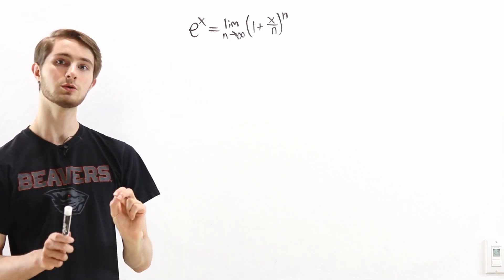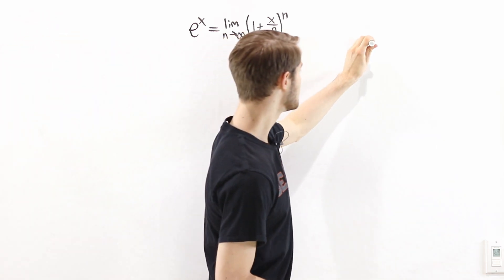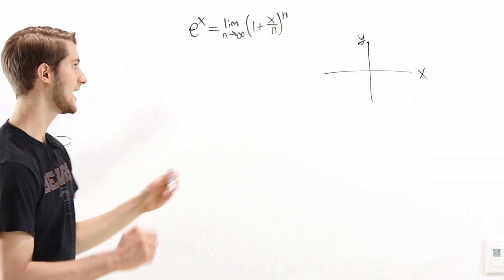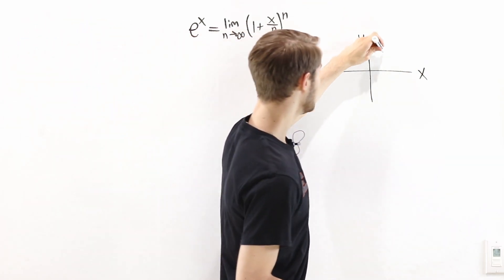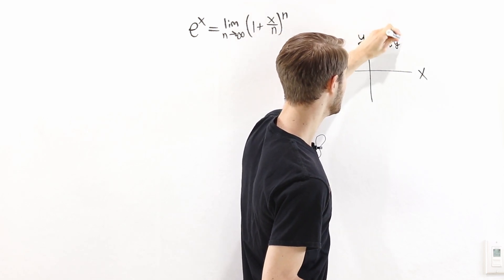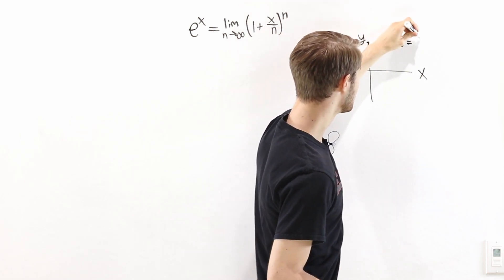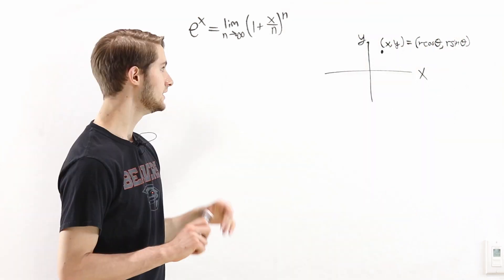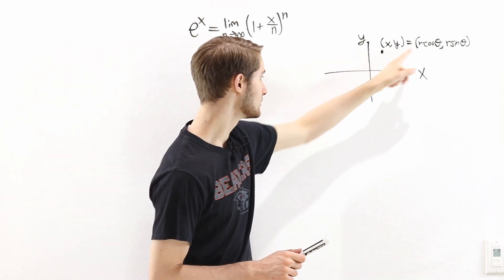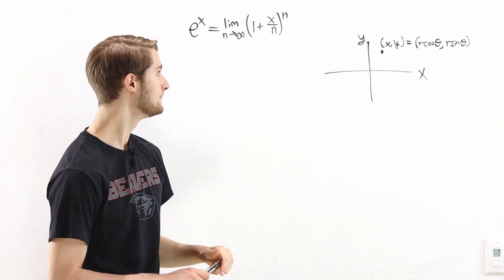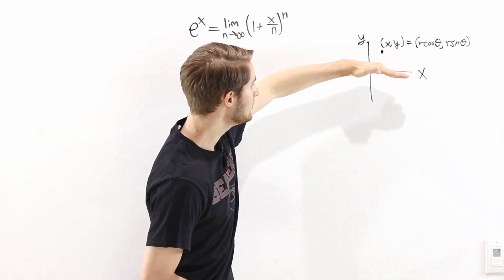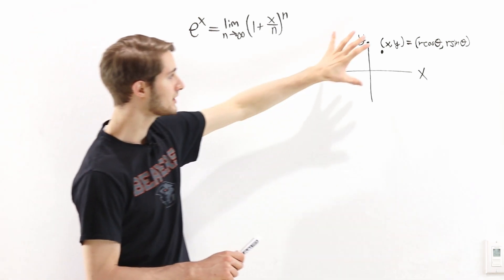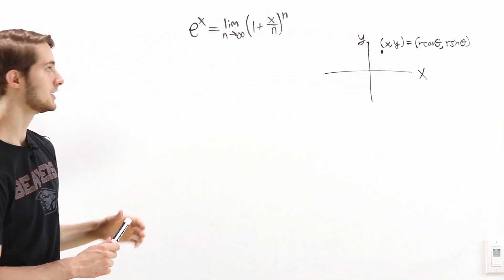To figure that out, we're going to start with some polar coordinates. If we're looking at an ordinary 2D plane — a 2D graph with x and y axes — any point, any pair of numbers x comma y, we can write as r cosine theta comma r sine theta. Here r is the distance from the origin to the point x comma y, and theta is the angle that this point makes off of the x-axis.